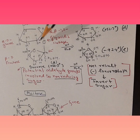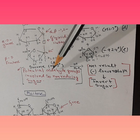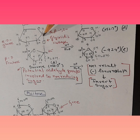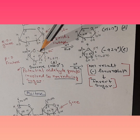Coming back to our molecule, it becomes very clear that this OH has been involved. This was our potential aldehyde group, and that potential aldehyde group has been involved in the glycosidic linkage, so it is not free. Therefore, sucrose is a non-reducing sugar.